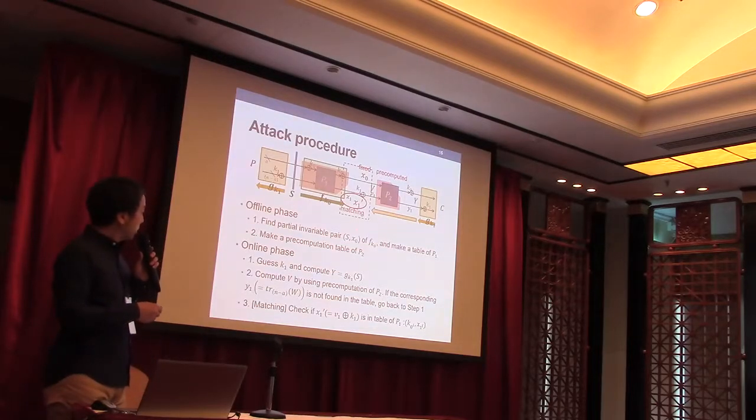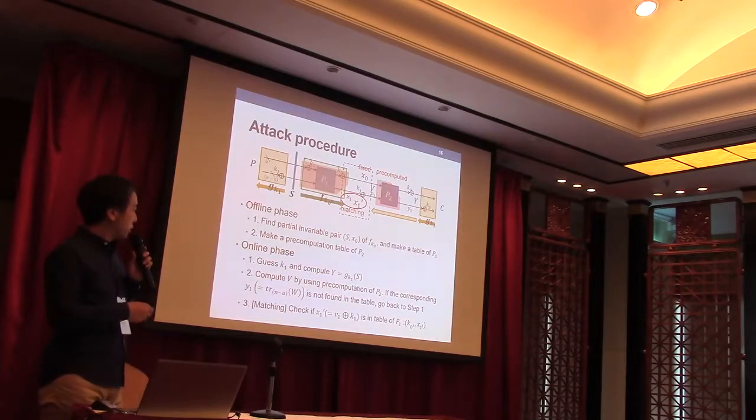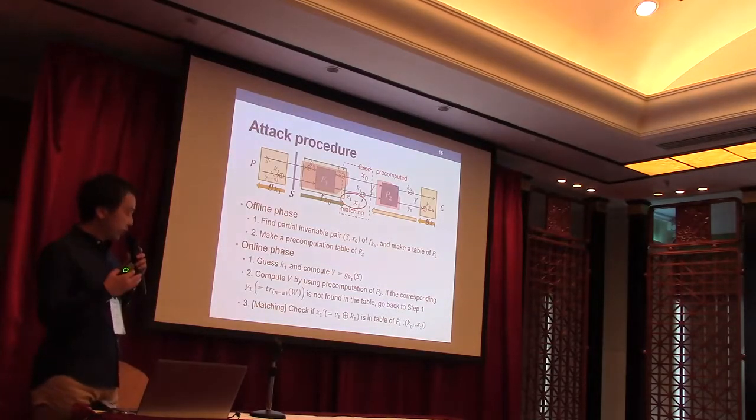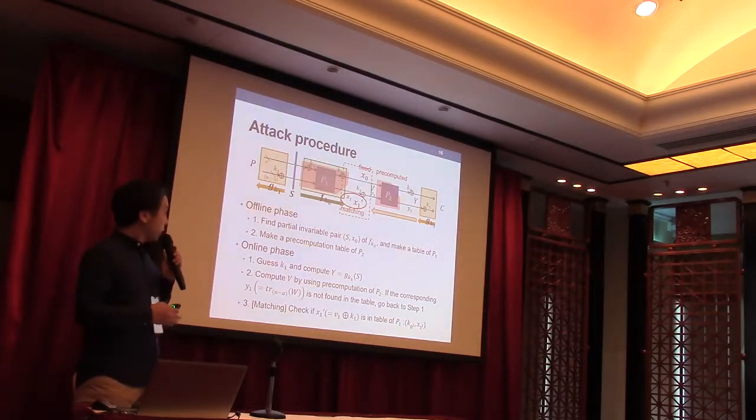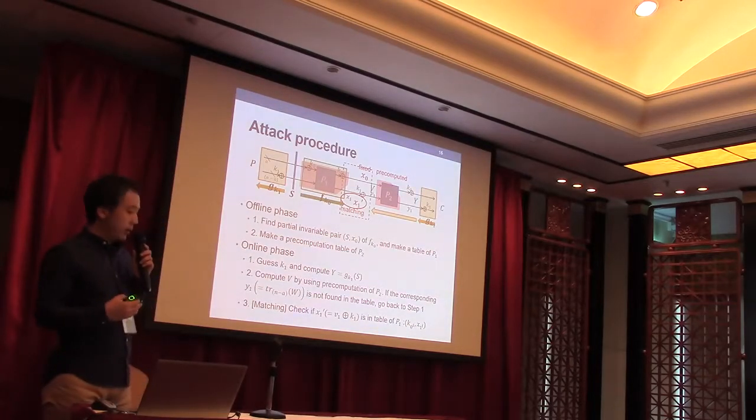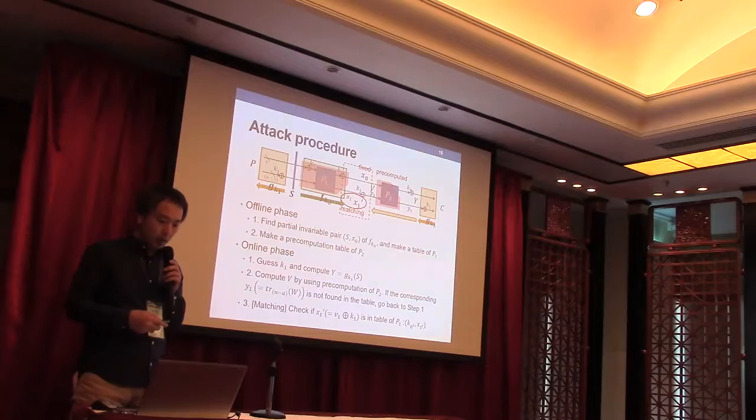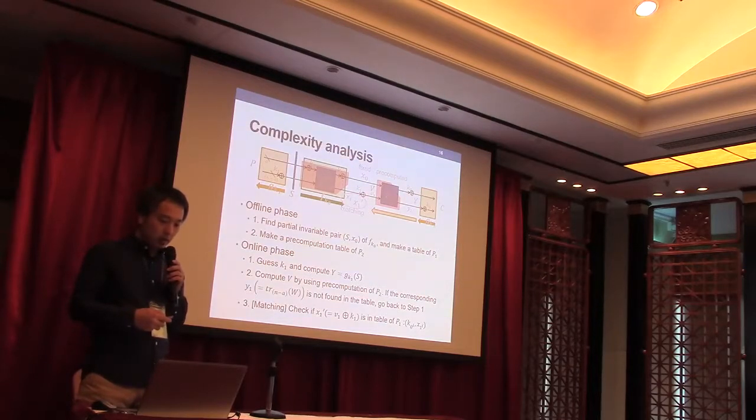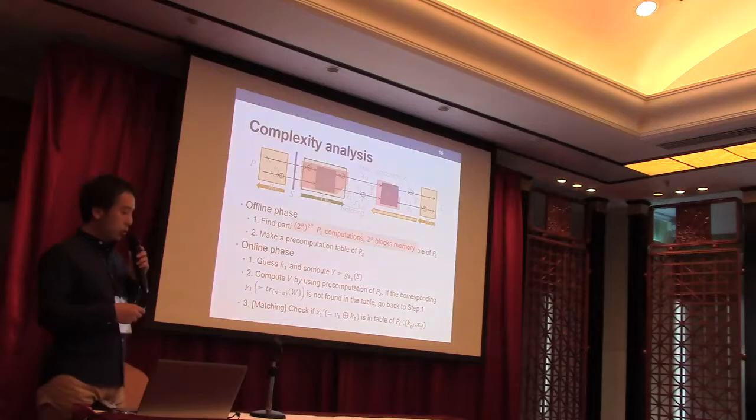Then compute V from Y by using the precomputation table of P2. Finally, we check if X1 prime equals V1 plus K1 is in the precomputation table of P1. If we can find such X1 prime, the correct corresponding K0 and K1 will serve as candidates of the correct key.